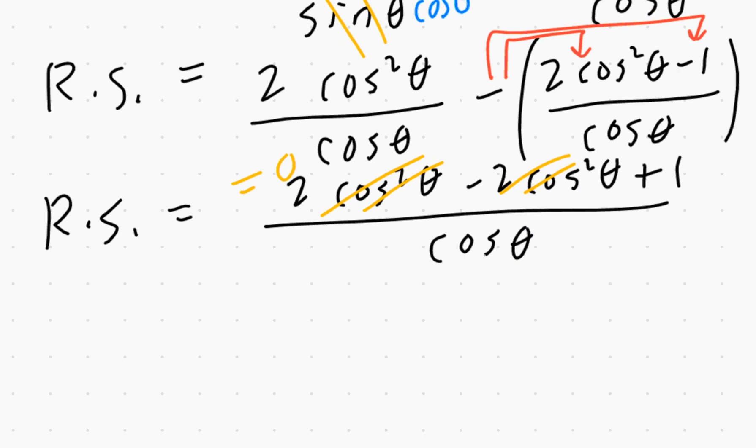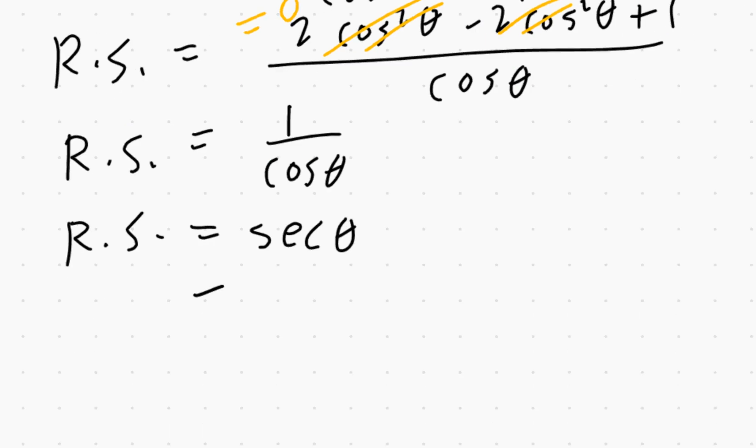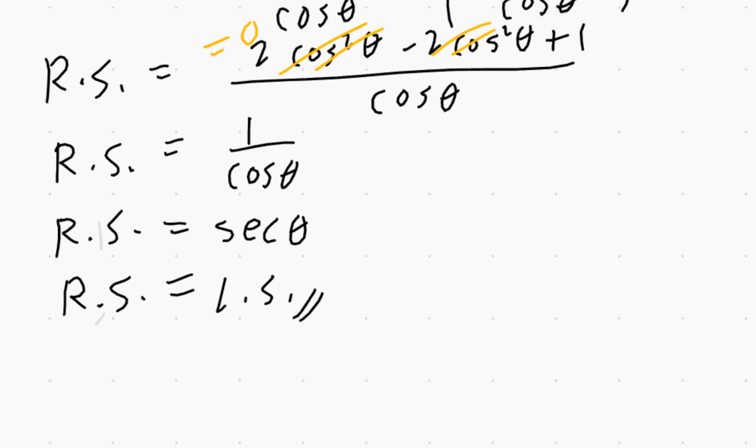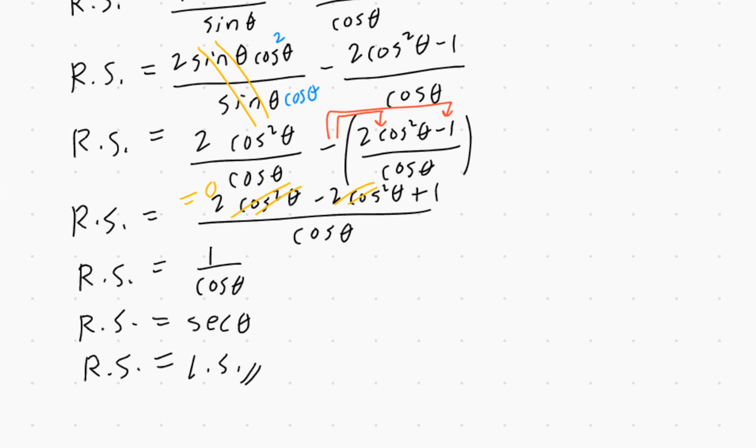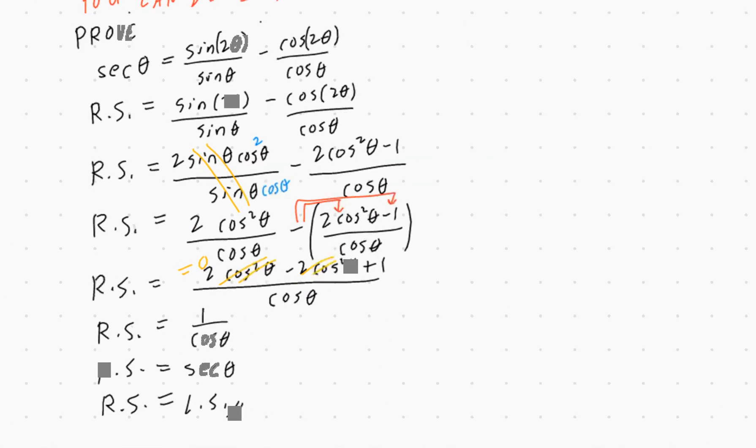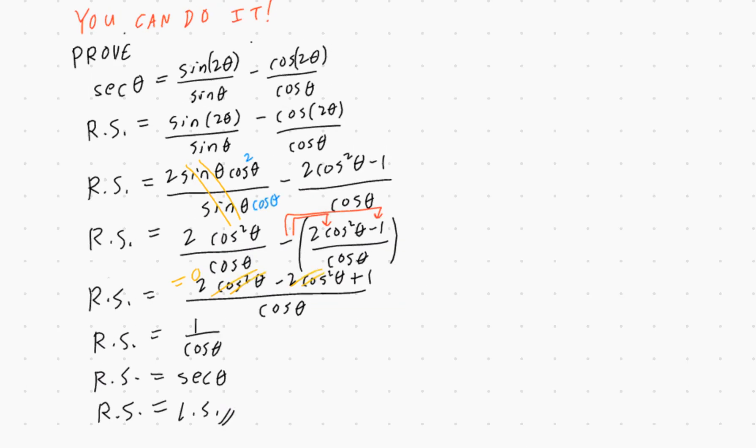And as expected, since we're beginning with the end in mind, 1 divided by cos θ equals sec θ, which is exactly the same as the left-hand side. Okay, there's the proof. I hope this makes sense.